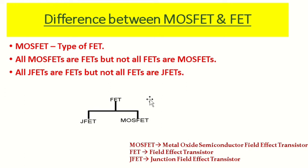Just to quickly remind you of the terminology: MOSFET stands for Metal Oxide Semiconductor Field Effect Transistor. FET is simply Field Effect Transistor. JFET is Junction Field Effect Transistor. The phrase 'field effect transistor' is common to both MOSFET and JFET, but MOSFET adds 'metal oxide semiconductor' whereas JFET refers to 'junction'.